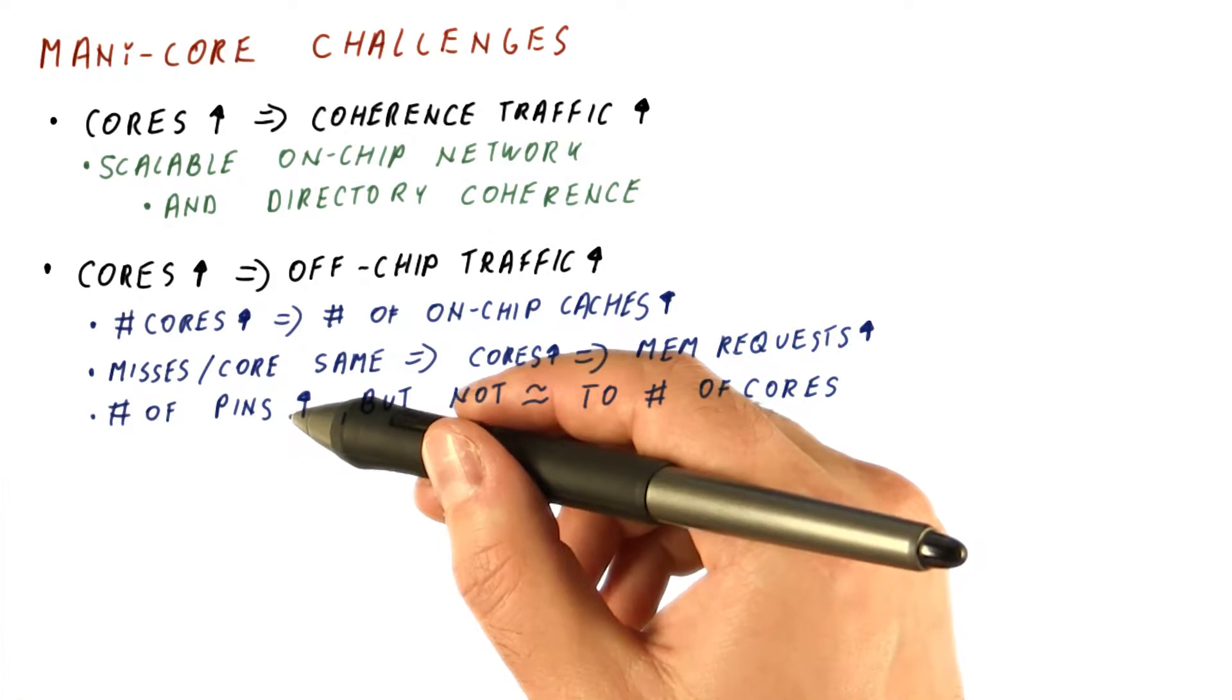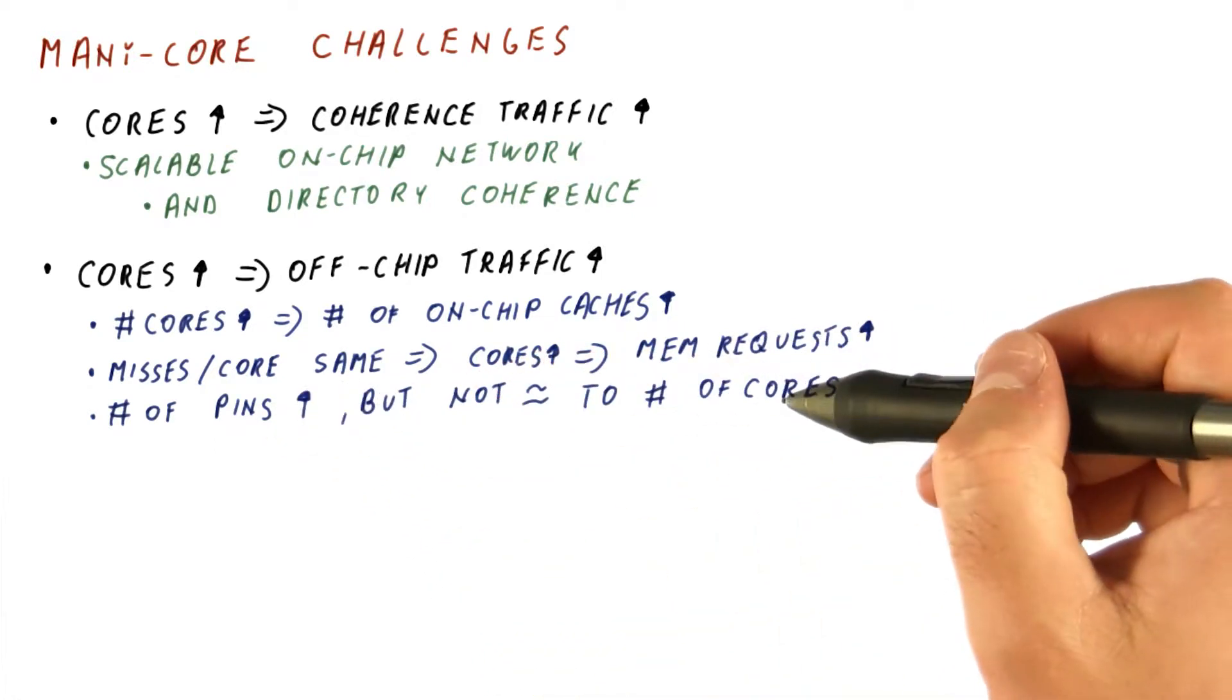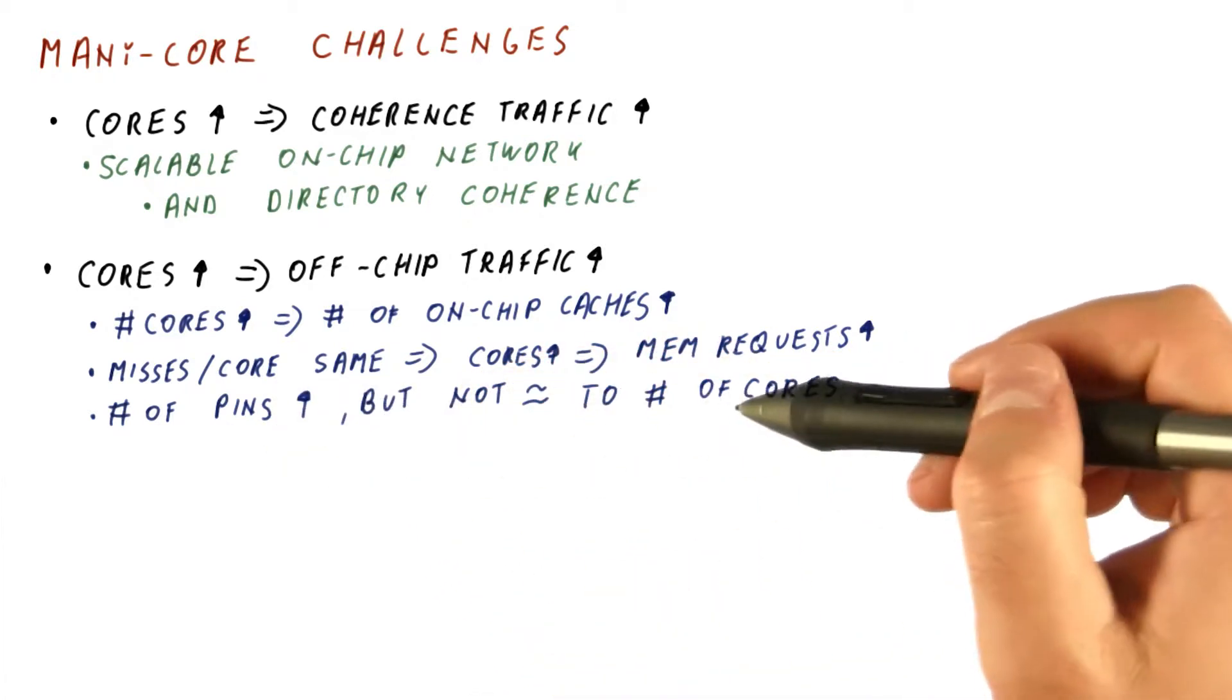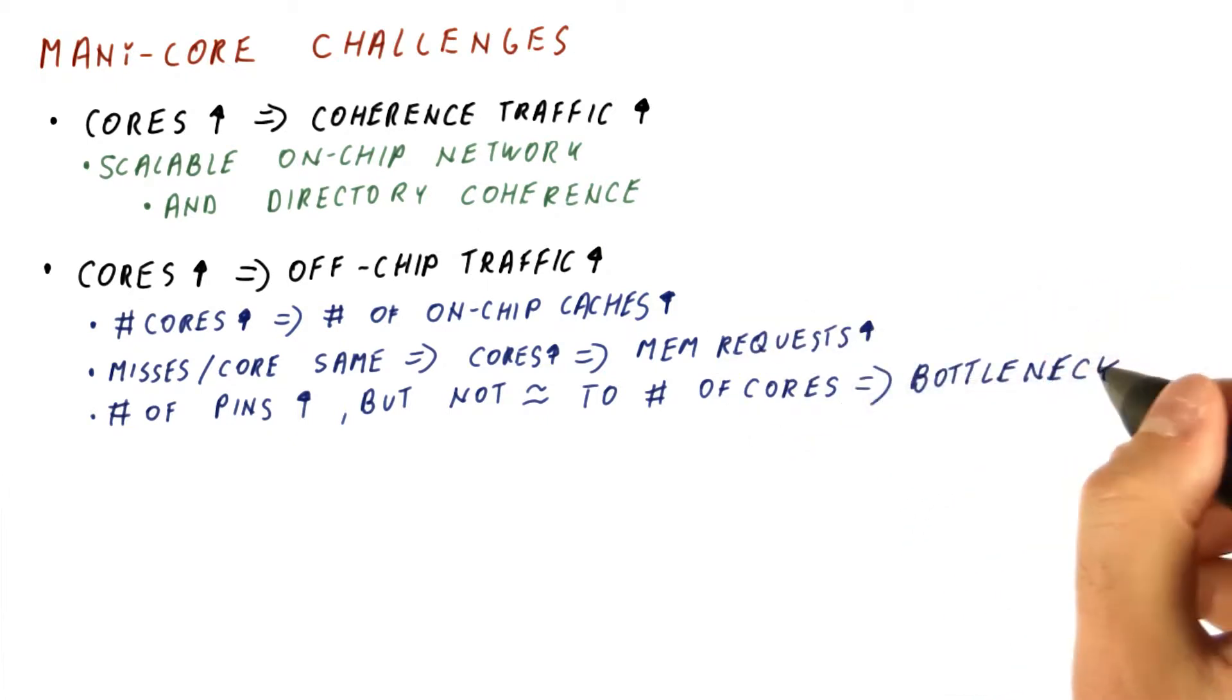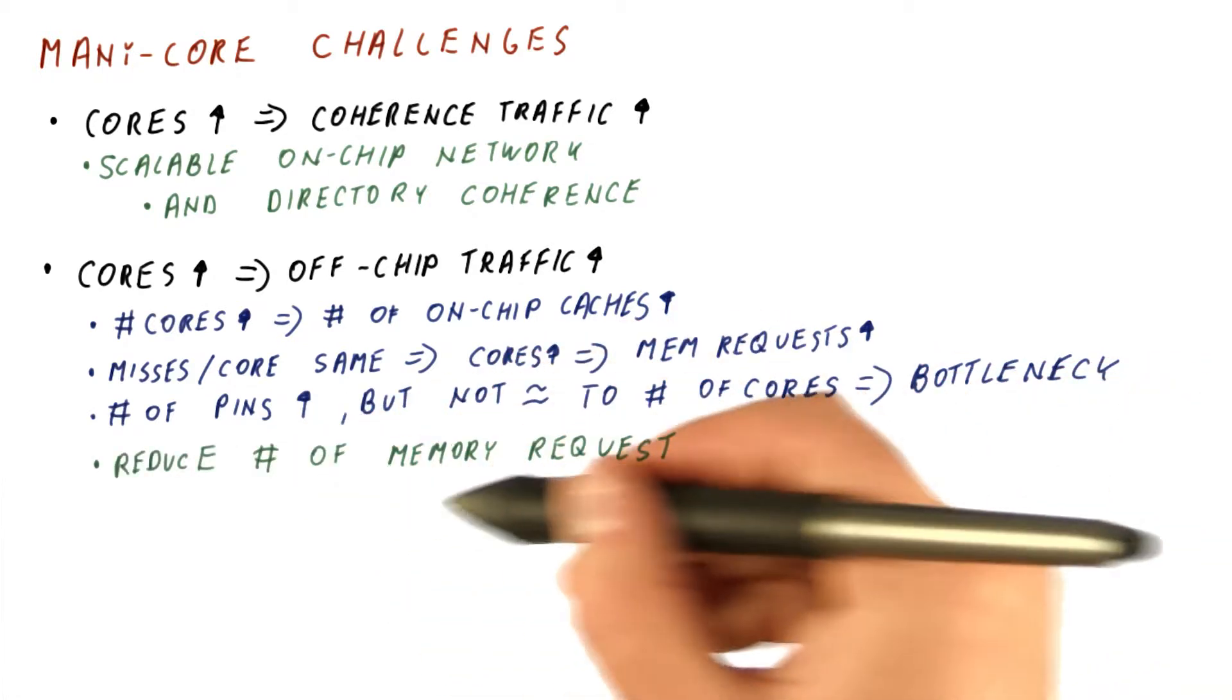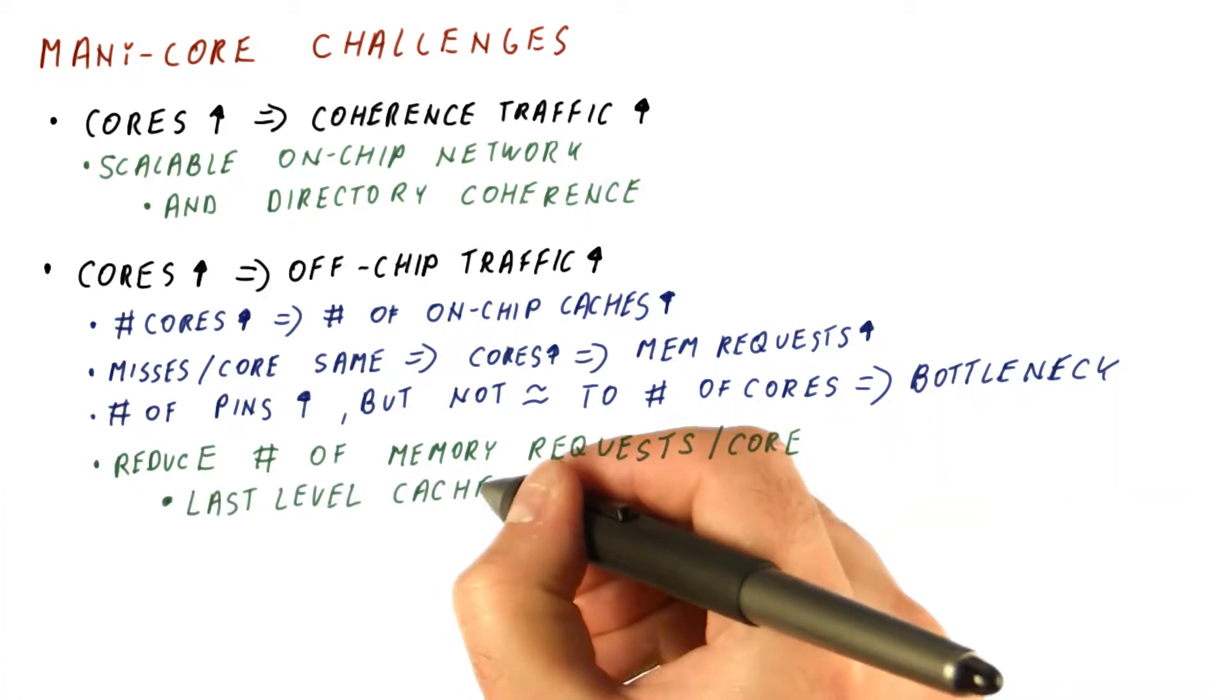Because these pins have to physically be large enough to not break when we are moving the chip around and plugging it into a motherboard. So what happens is we get some improvement in off-chip throughput, while our demand for it basically grows in proportion to the number of cores. So our off-chip available throughput becomes a bottleneck. So we need to reduce the number of memory requests that we generate per core.